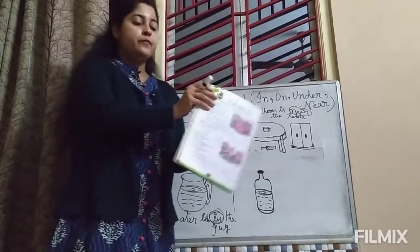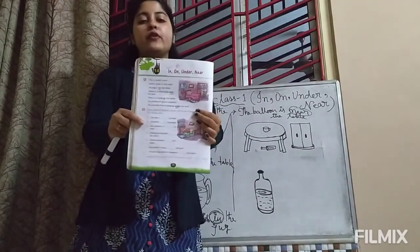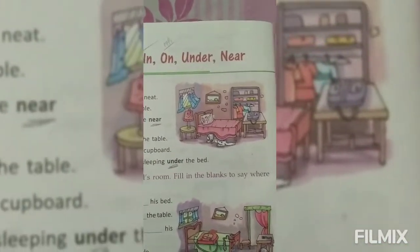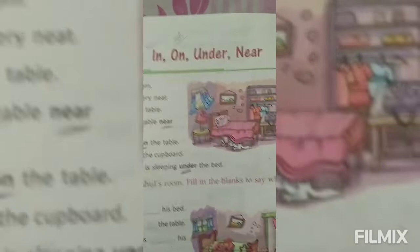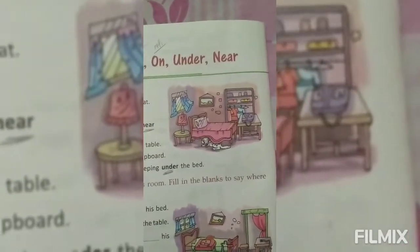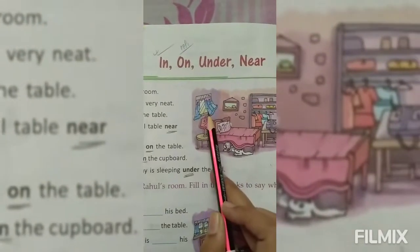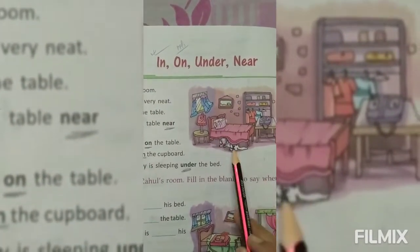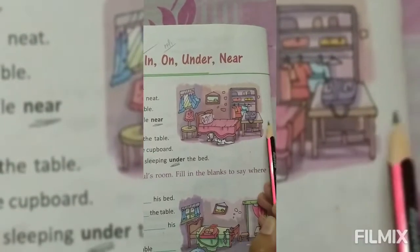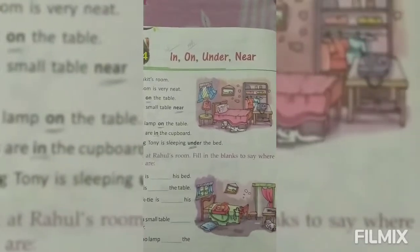Now look at the examples in your book — there is a picture. This is Ankit's room. Ankit is a boy, and in his room there are many things like: window, cartons, lamp, table, bed, pillow, picture, one pet dog, one bag, another table, wardrobe, and clothes. So we can see many things in Ankit's room.